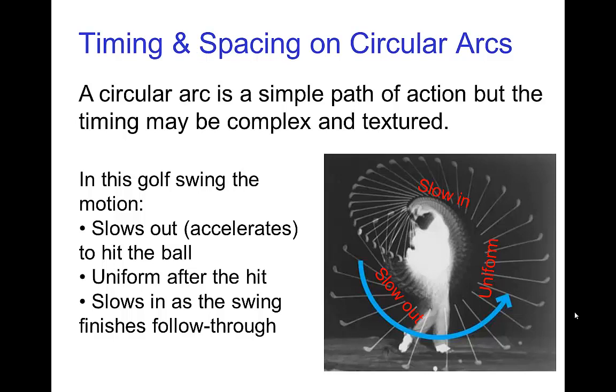This golf swing is an example. It's more or less a circular arc for most of the swing, but it has a lot of variety in the timing. First the club is slowing out as it accelerates, then more or less uniform constant speed after hitting the ball, and then finally slowing in until it comes to a stop.